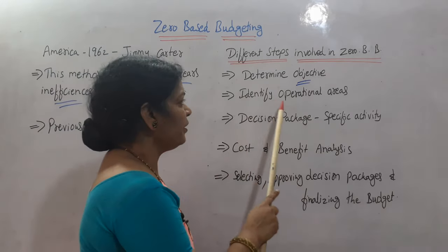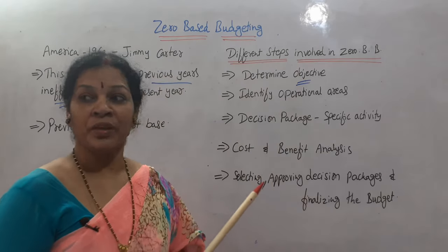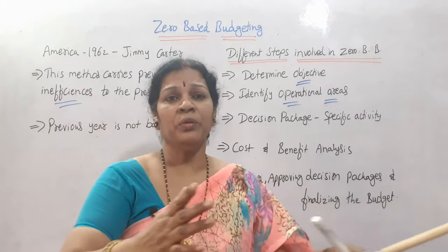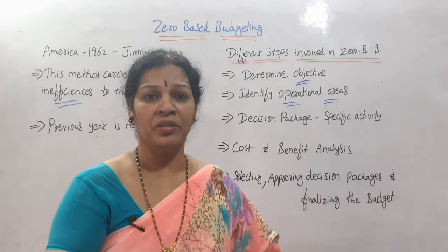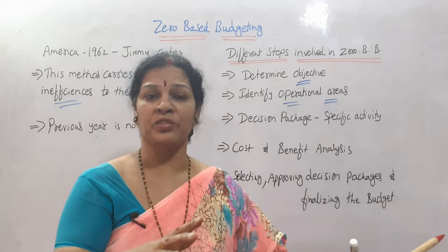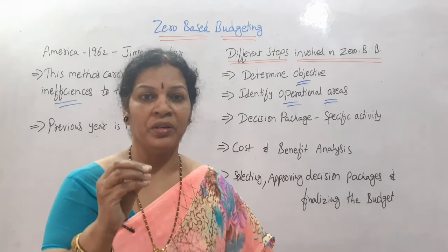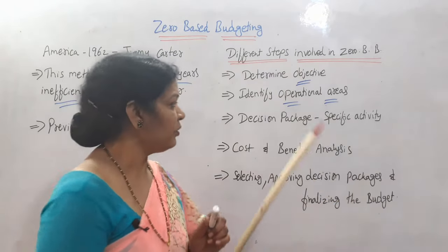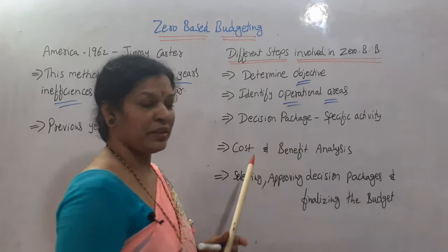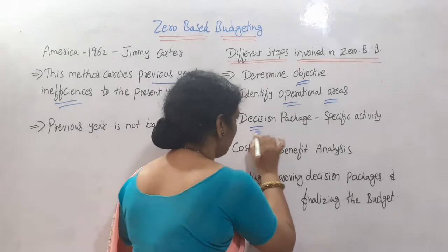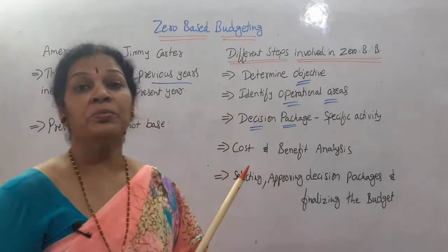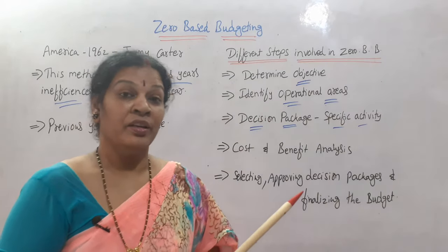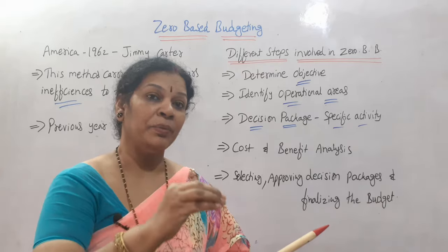The second step is to identify operational areas. We are not going to focus on the entire organization — we focus only on particular areas. The third step is the decision package, which is one of the important steps. A decision package is nothing but a specific activity on a particular concept.